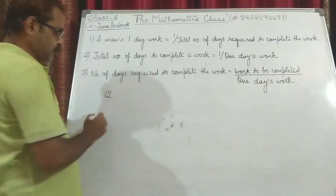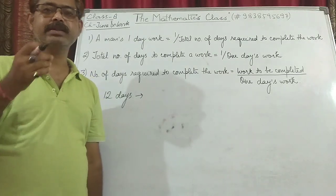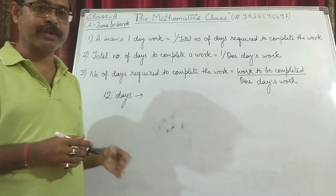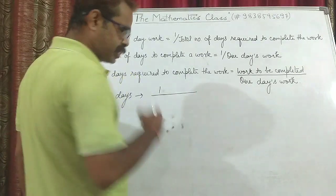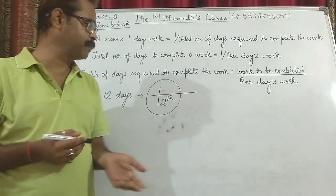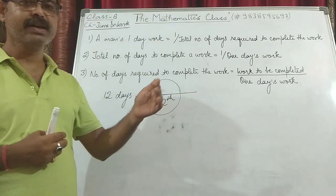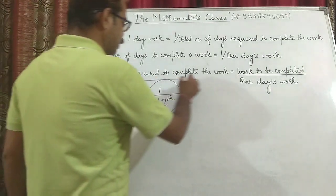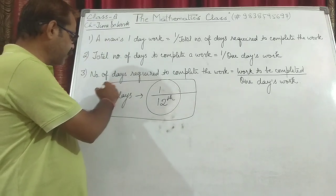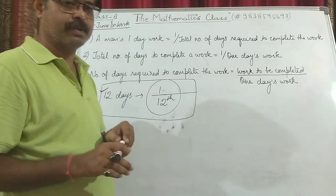The first point is: a man's one-day work is 1 upon the total number of days required to complete the work. For example, if a child can complete one chapter in 12 days, then on a general basis we can say he will study 1/12 of the total chapter in one day. Practically, one day he may study half the chapter and another day nothing, but mathematically we take it that if a person completes work in 12 days, in one day he completes 1/12th of the work.